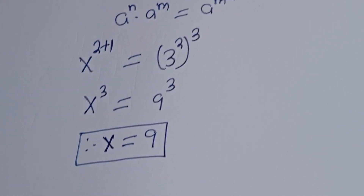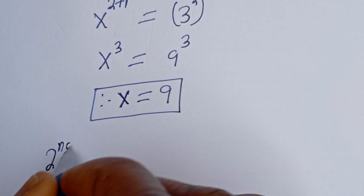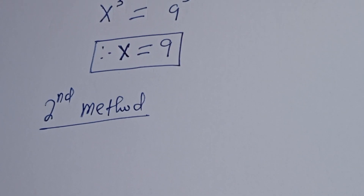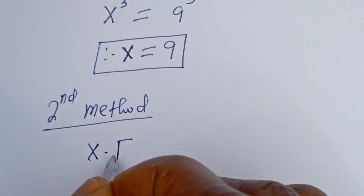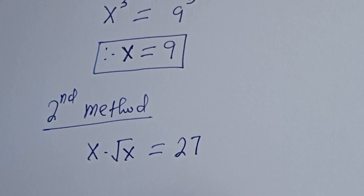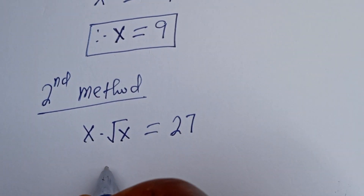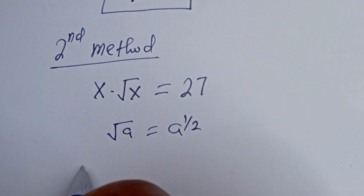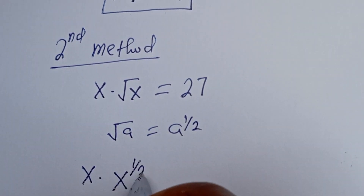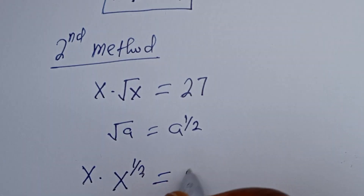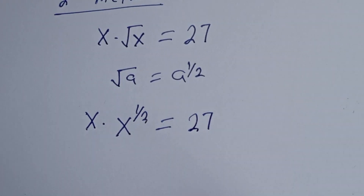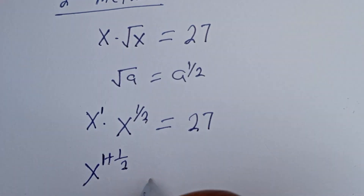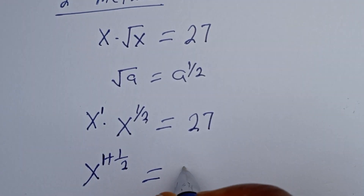Let's consider the second method. From the second method, we have S multiplied by root of S is equal to 27. We know that the square root of A is equal to A to the power of 1 over 2. So this becomes S multiplied by S to the power of 1 over 2 is equal to 27. Then, since S is also S to the power of 1, we have S to the power of 1 plus 1 over 2 is equal to 27.